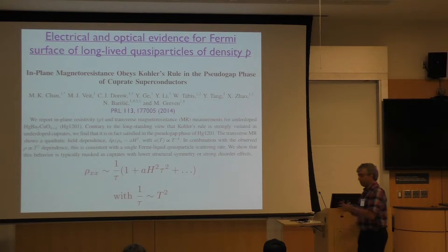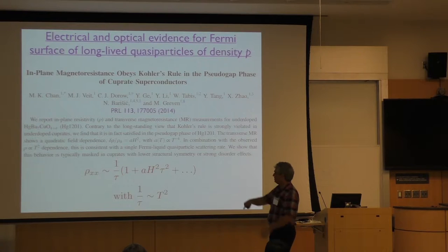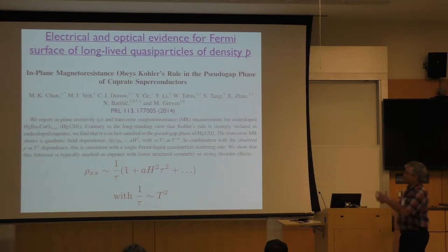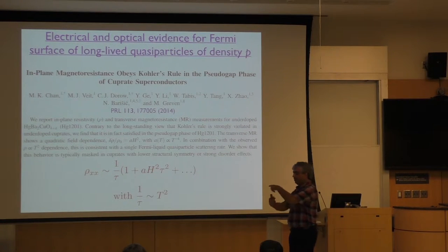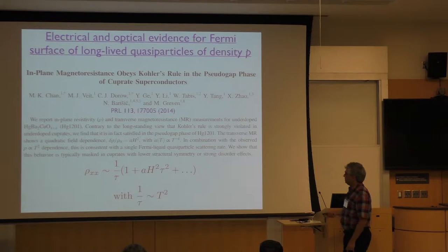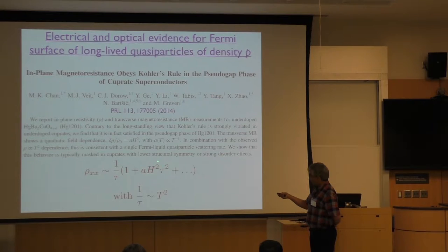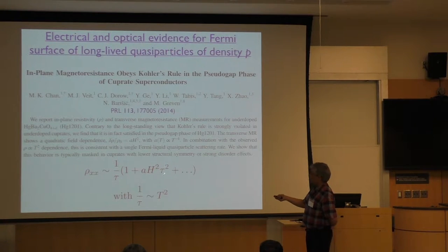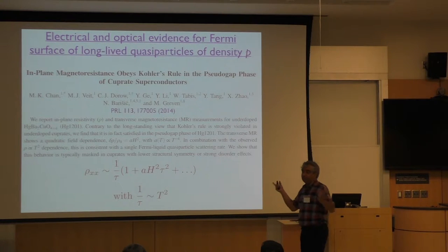Furthermore, if you take this theory of quasi-particles which in a magnetic field are moving around in cyclotron orbits around the Fermi surface, and you open up Ziman's book written in the 1960s — what happens to the magnetoresistance from quasi-particles moving around the Fermi surface? What Ziman predicted, called Kohler's rule, is that resistance should go as field squared, and the coefficient of the field squared term should go as tau squared, meaning as 1 over T to the fourth.